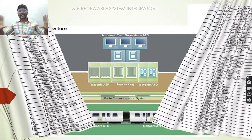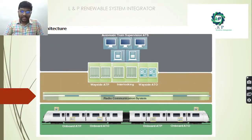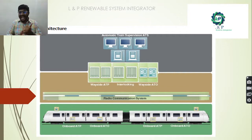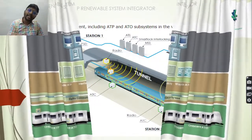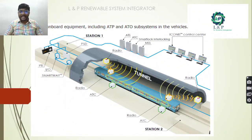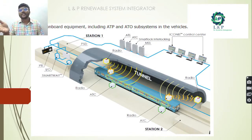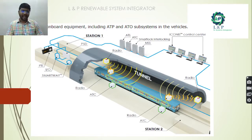This is a simple architecture of CBTC technology. It includes automatic train supervision, wayside ATP with interlocking, wayside ATO, a radio communication system, and on-board equipment such as ATP and ATO. At the station level we have PTS, IOS, and Smartways. Inside the tunnel we need radio and ATC. On the wayside we also have ATS, ATC, and smart enveloping systems.